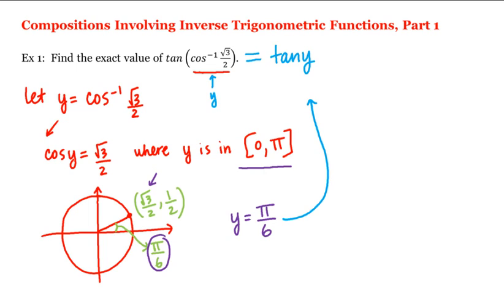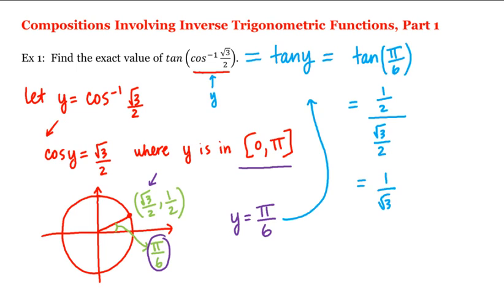Therefore tangent of pi divided by six, which equals y over x, is one half divided by the square root of three over two. The two's cancel, giving us one divided by square root of three, and then rationalizing gives us our answer of square root of three divided by three.